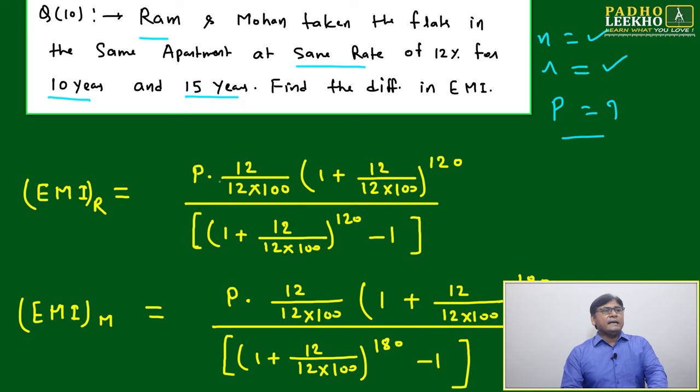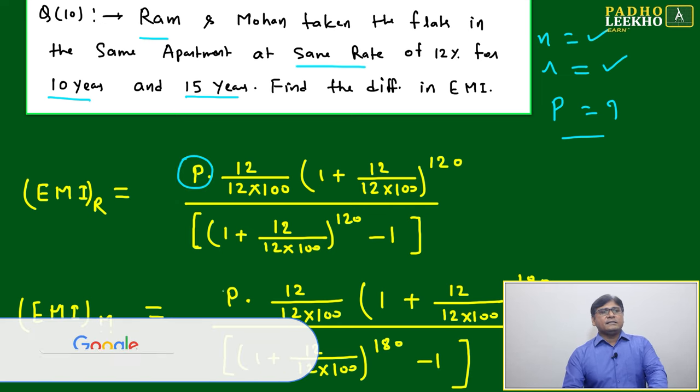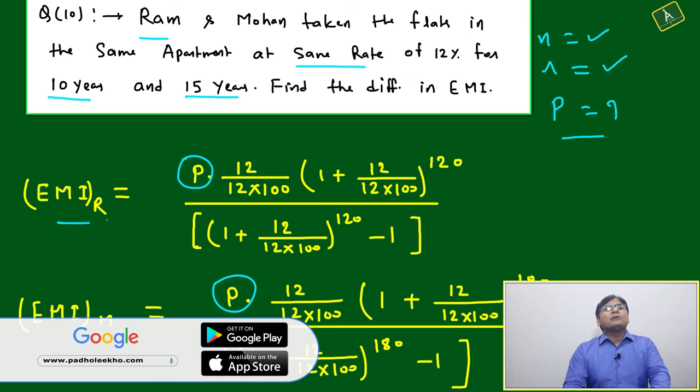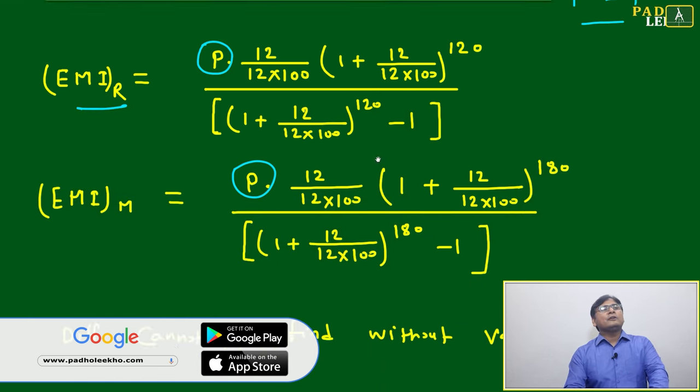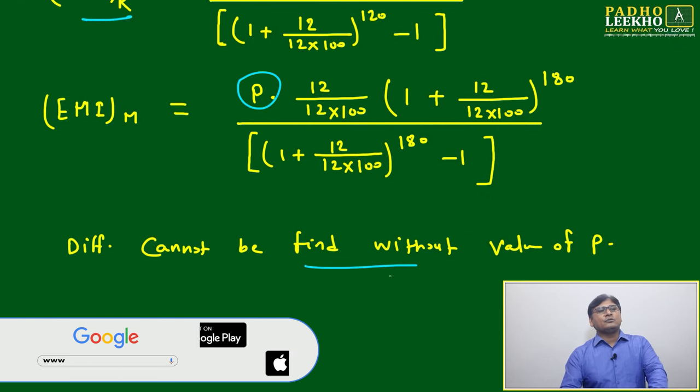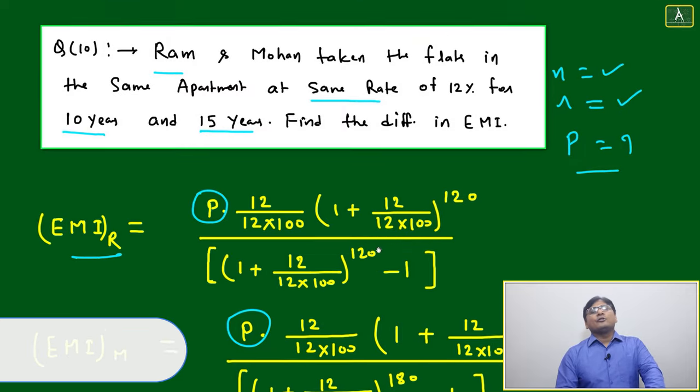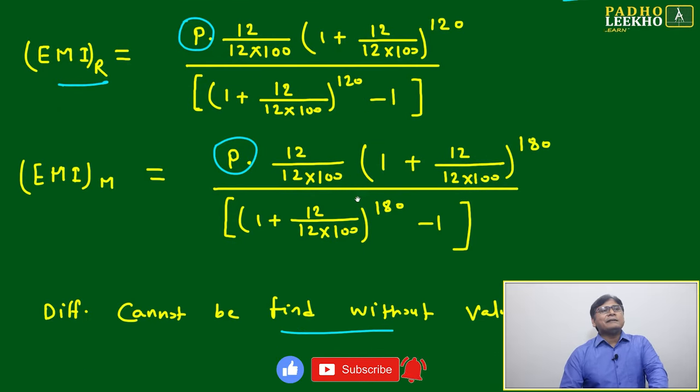Then EMI calculation will depend on P into 12 by 12 into 100. This P, how to calculate EMI without P we cannot calculate. Then difference we cannot find.